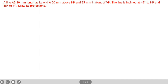The example we are going to see: a line AB, 80mm long. The length of the line is 80mm and the name of the line is AB, so one point is A and the other point is B. It has its end A 20mm above HP and 25mm in front of VP — meaning point A is 20mm above the horizontal plane and 25mm in front of the vertical plane. The line is inclined at 45 degrees to HP and 35 degrees to VP. So we are going to draw the projection of this line AB.